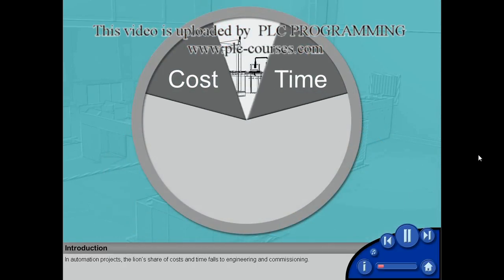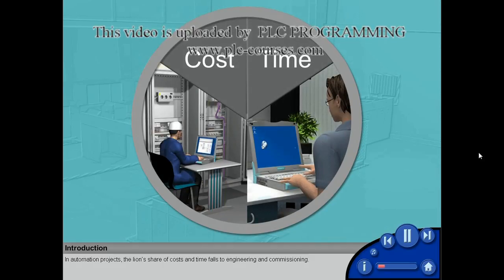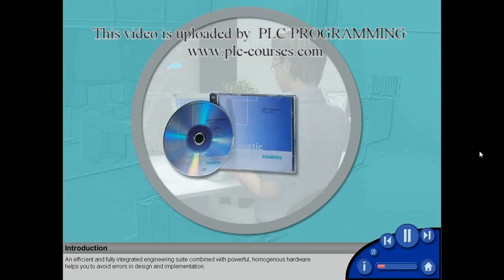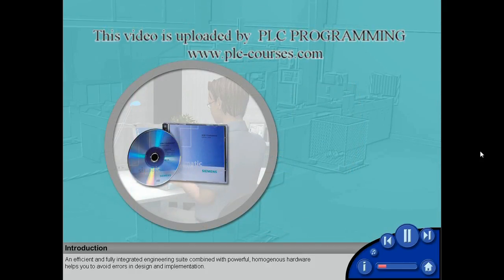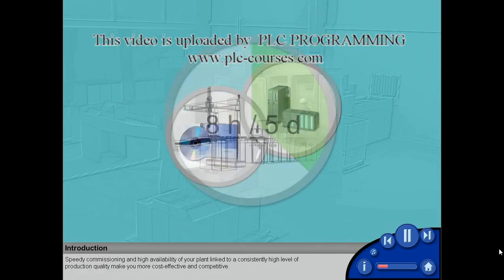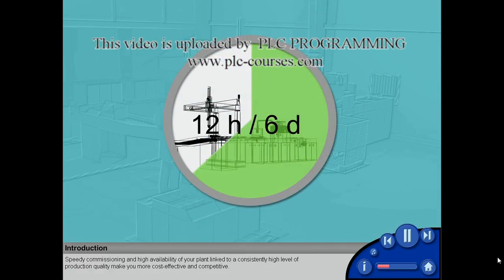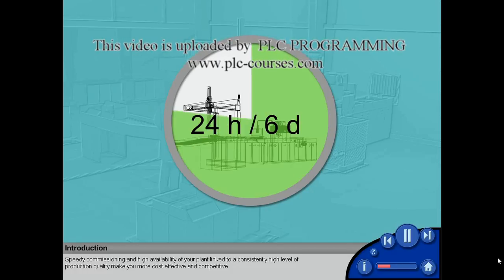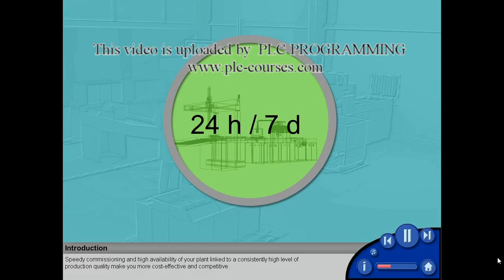In automation projects, the lion's share of costs and time falls to engineering and commissioning. An efficient and fully integrated engineering suite, combined with powerful homogeneous hardware, helps you to avoid errors in design and implementation. Speedy commissioning and high availability of your plant, linked to a consistently high level of production quality, make you more cost effective and competitive.